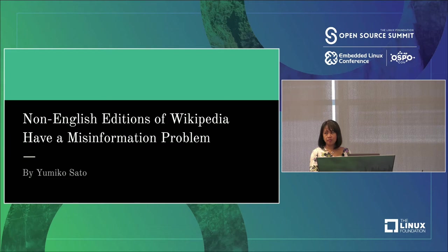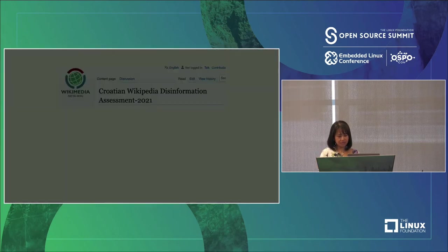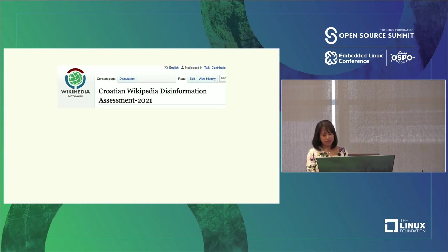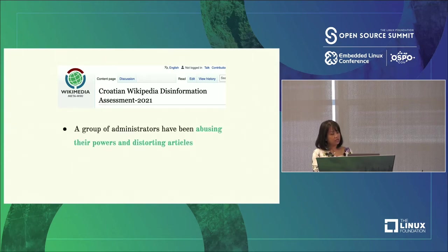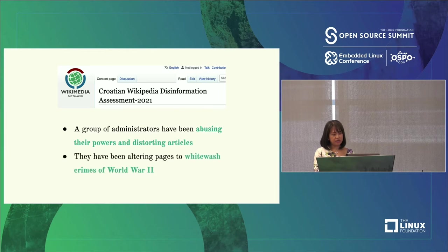Many of you may know that Wikipedia isn't the most reliable source on the internet, but Wikipedia's misinformation problem runs even deeper than you may realize. A few months ago the Wikimedia Foundation, which operates Wikipedia, released a report called Croatian Wikipedia Disinformation Assessment. In the report summary, the foundation acknowledged that a group of administrators have been abusing their powers, distorting articles, whitewashing crimes of World War II, and promoting a fascist worldview — and this has been going on for over a decade.